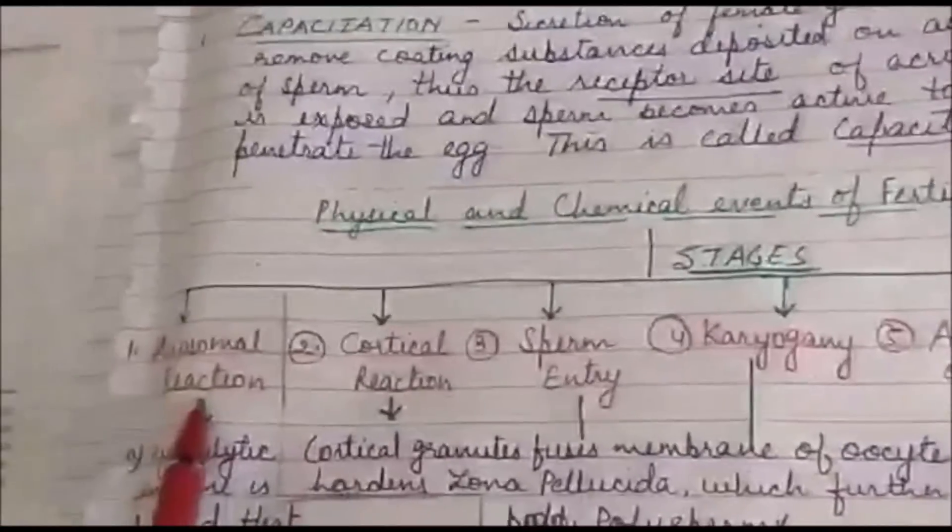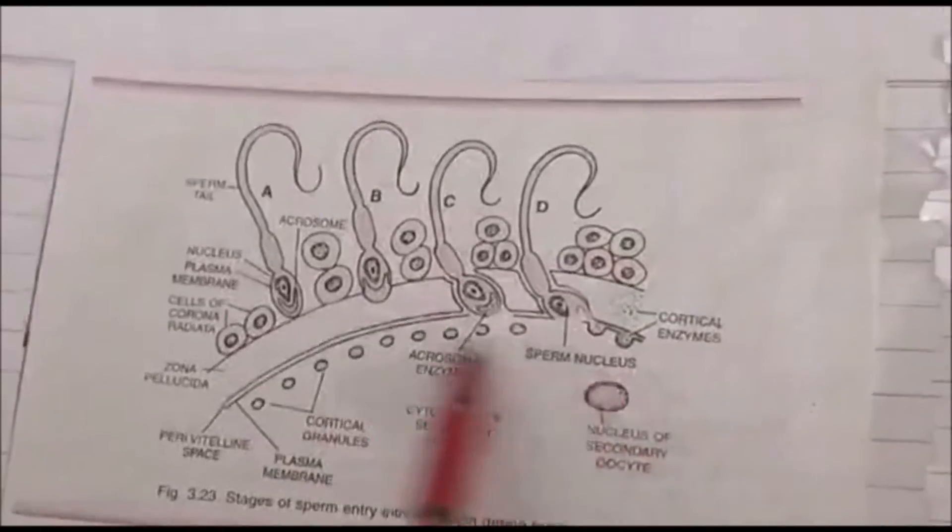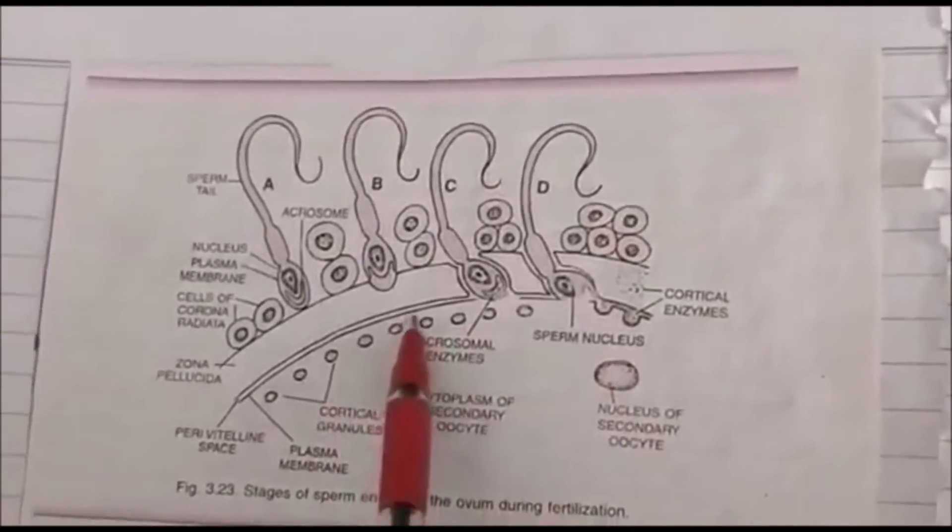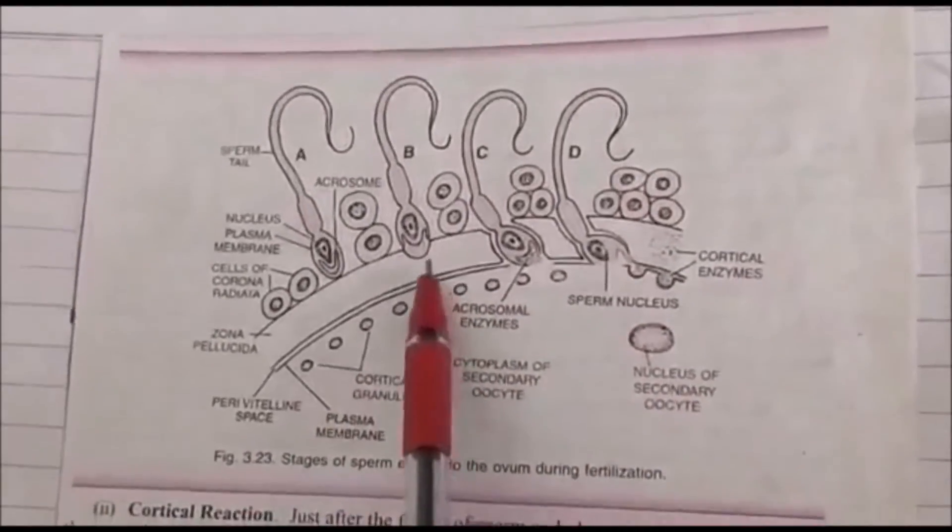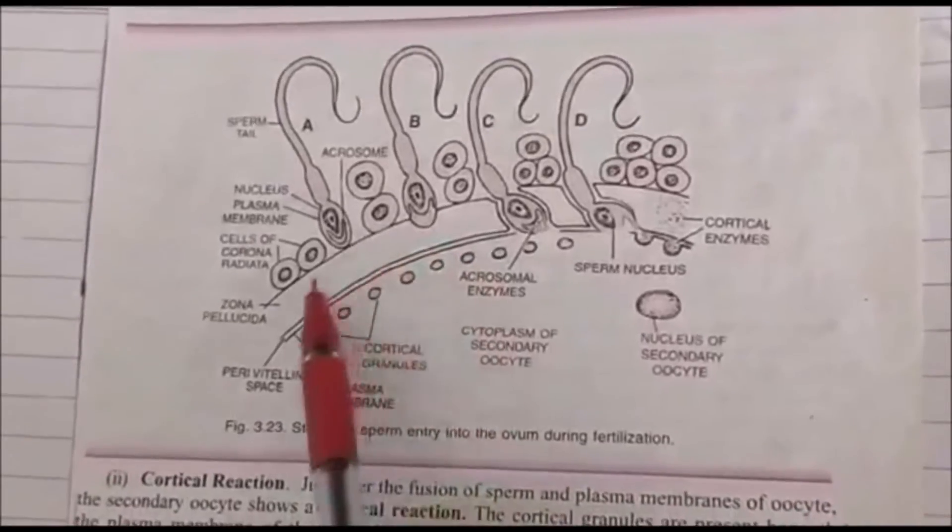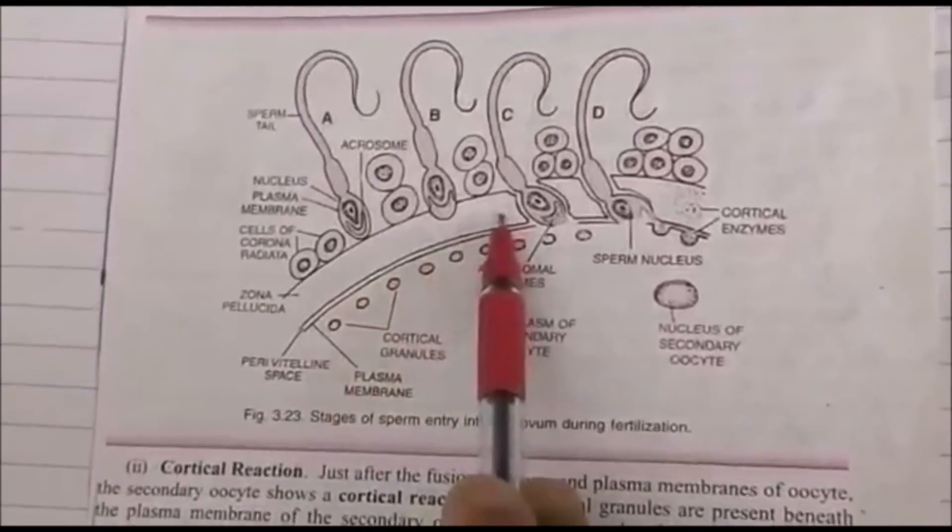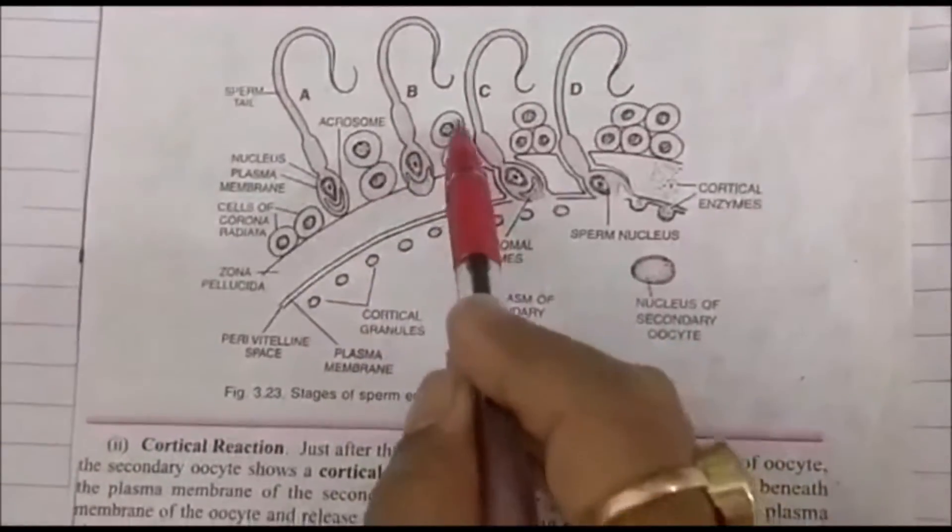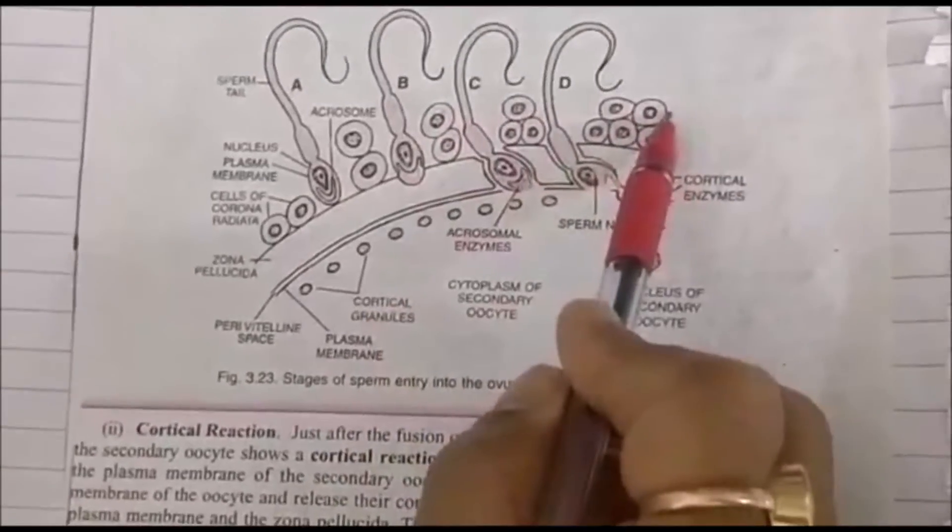Now let us first study acrosomal reaction. Come up to this diagram. This inner part is the secondary oocyte. It is covered by a plasma membrane. Outside the plasma membrane of the secondary oocyte, there is zona pellucida layer, and outside the zona pellucida layer, there is corona radiata.